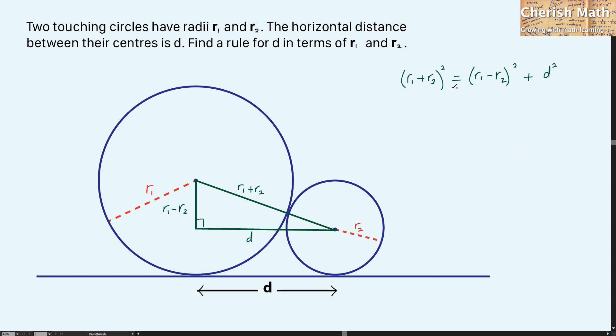And now I try to expand it. That would be R1 squared plus 2R1R2 plus R2 squared equal R1 squared minus 2R1R2 plus R2 squared plus D squared.